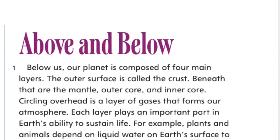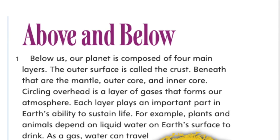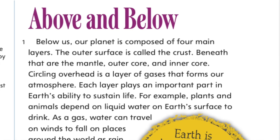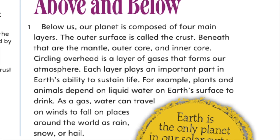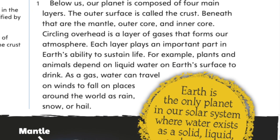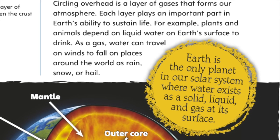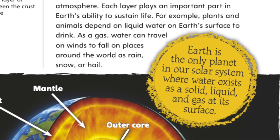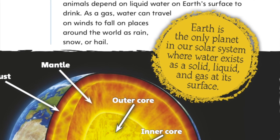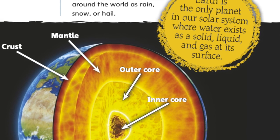Above and Below. Below us, our planet is composed of four main layers. The outer surface is called the crust. Beneath that are the mantle, outer core, and inner core. Circling overhead is a layer of gases that forms our atmosphere. Each layer plays an important part in Earth's ability to sustain life.